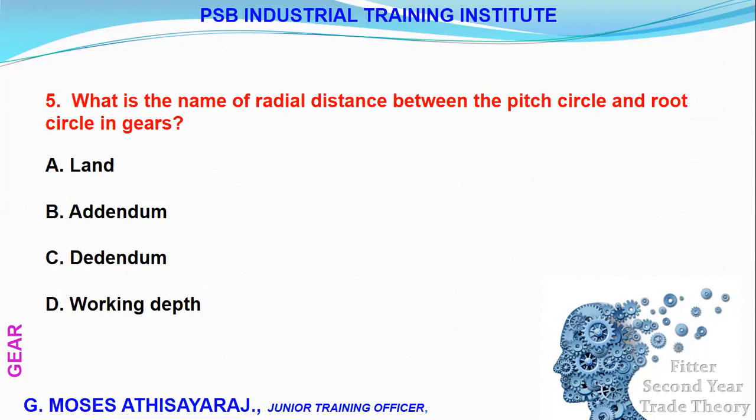What is the name of the radial distance between the pitch circle and the root circle? In a gear, we have three circles: the addendum circle, the pitch circle, and the root circle. The radial distance between the pitch circle and the root circle is the dedendum.